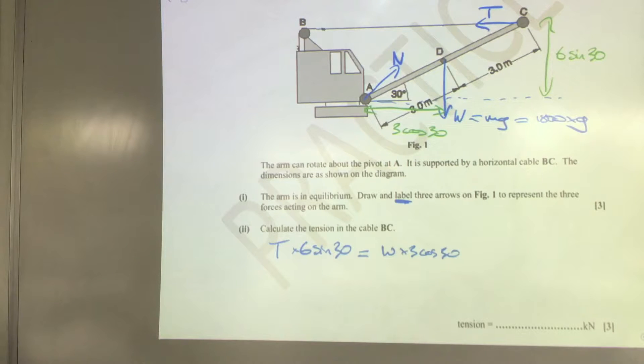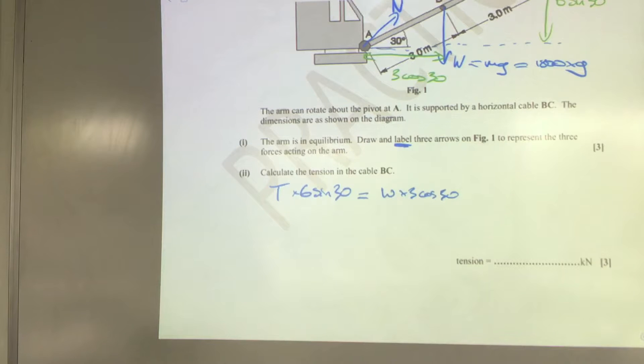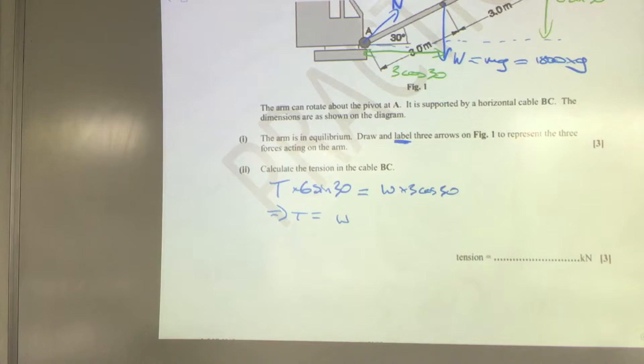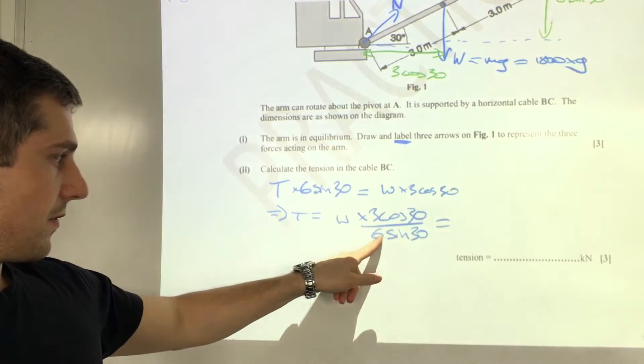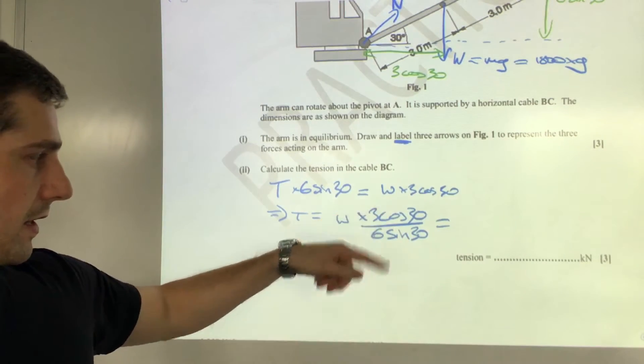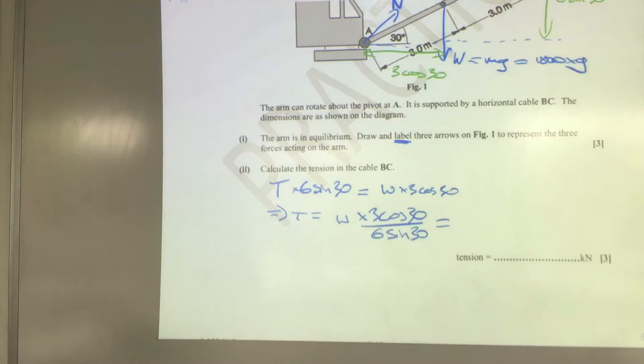I'll rearrange first, so now T will be equal to W times 3 cos 30 over 6 sin 30. I know that sine 30 is a half, so that's going to be 6 times a half is 3. So it would be 1800 times 9.8 multiplied by cos 30, that comes out as 15,276.